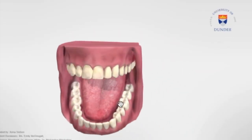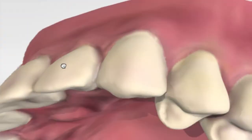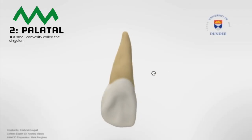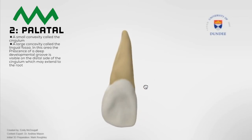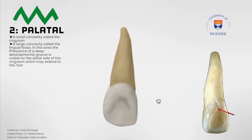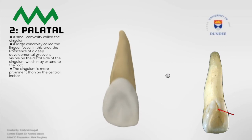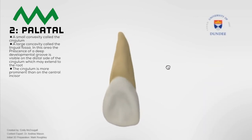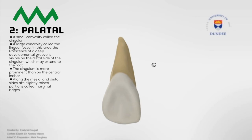Number two considers the palatal viewing aspect of the tooth — the surface of the tooth facing the palate. From this view, we can observe a small convexity called the cingulum, and a large concavity called the lingual fossa. In this area, the presence of a deep developmental groove is visible on the distal side of the cingulum, which may extend to the root. The cingulum is more prominent than on the central incisor. Along the mesial and distal sides are slightly raised portions called marginal ridges.